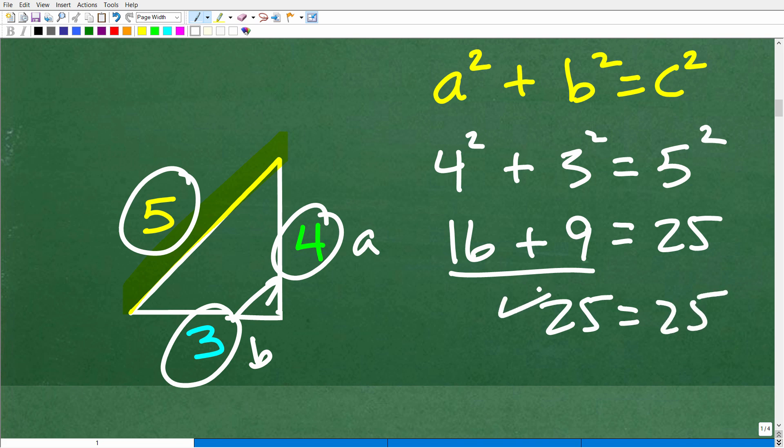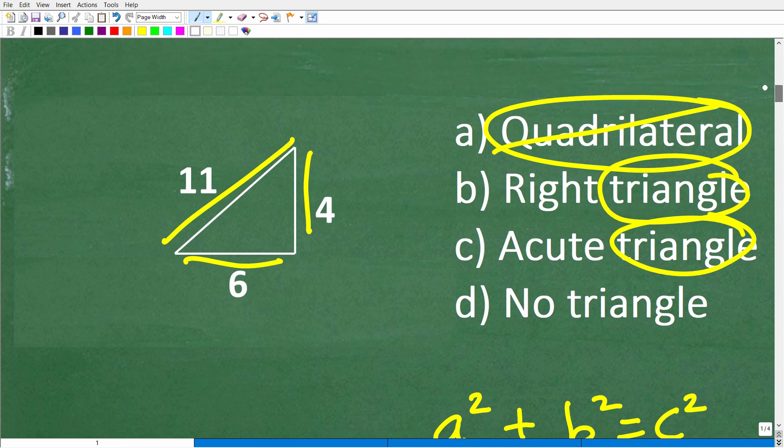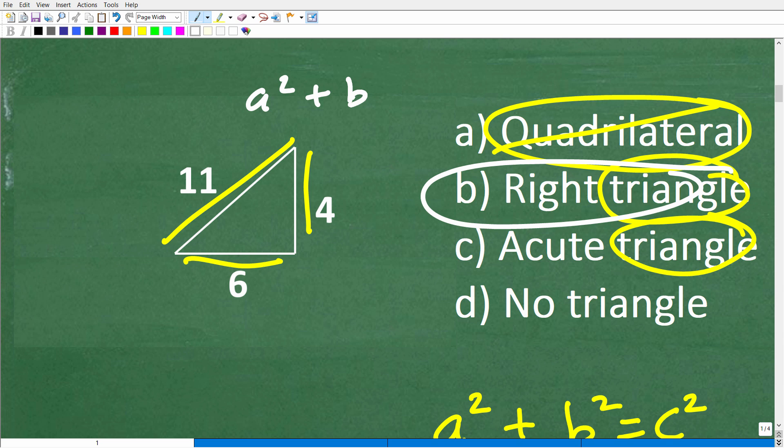So not only is this a triangle, it's also a right triangle, a special triangle where one of the angles is 90 degrees. All right, so again, you could have gone back over here and said, oh, I think it's a right triangle. Well, you could check with Pythagorean theorem, a squared plus b squared is equal to c squared. You'll see that this does not work out.